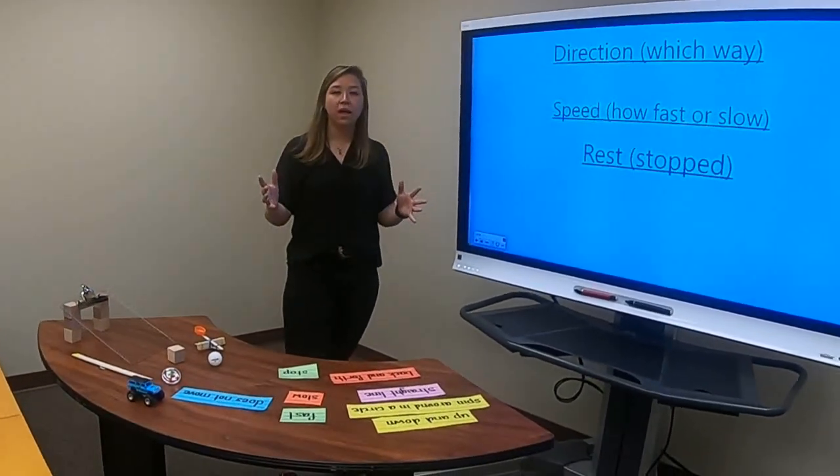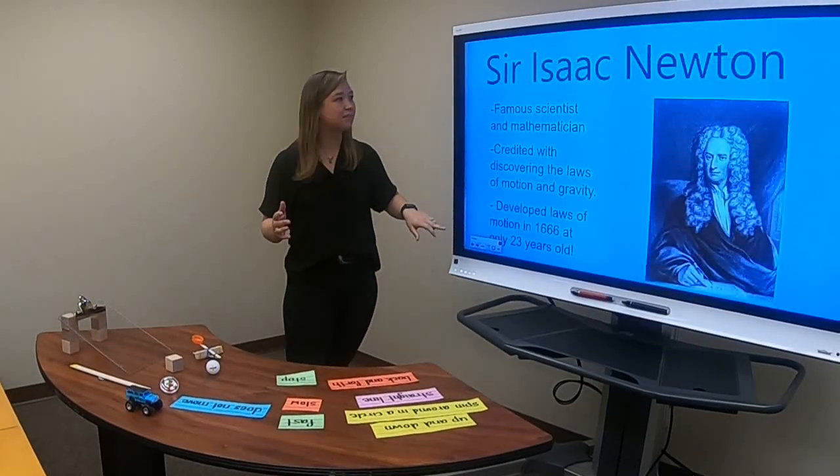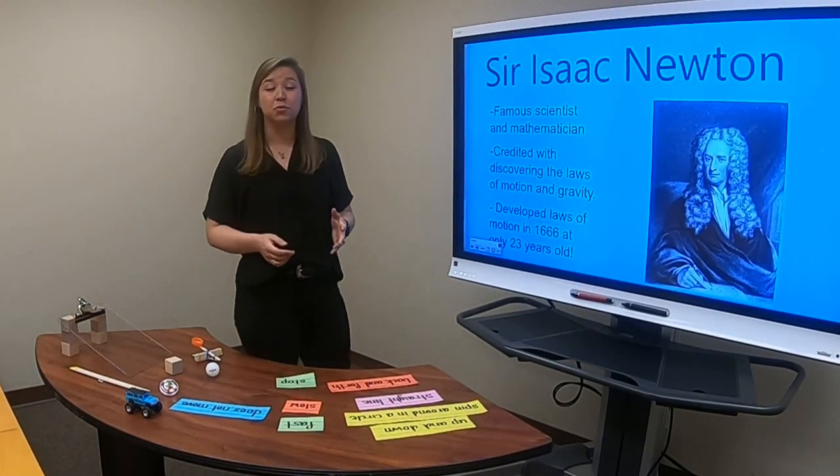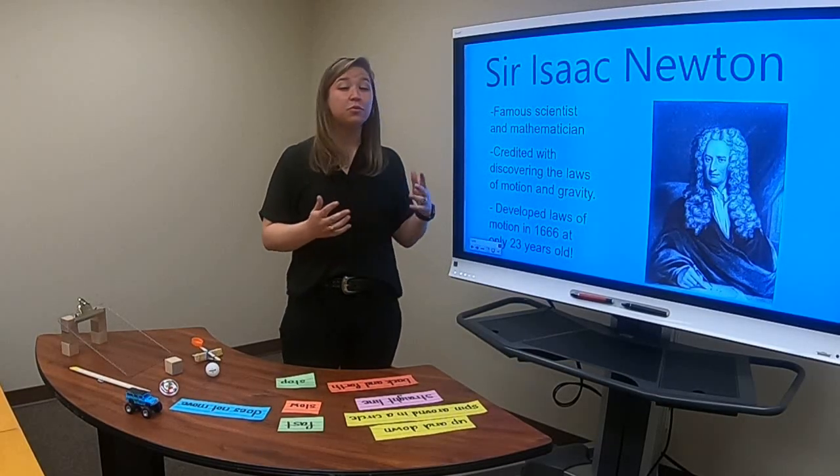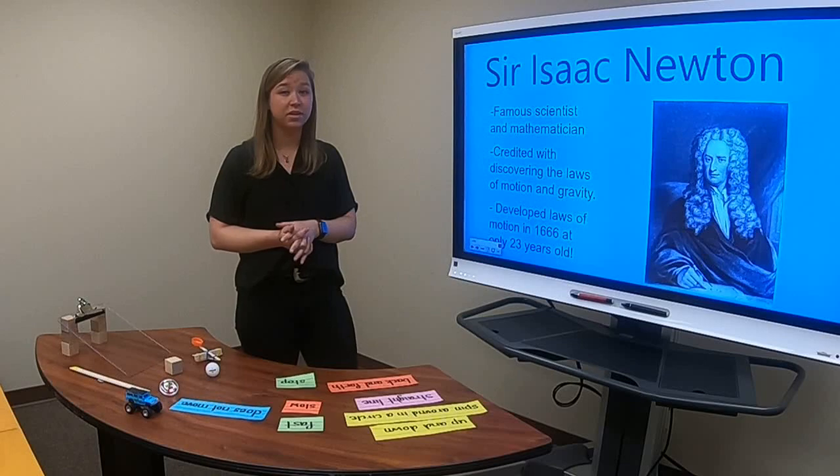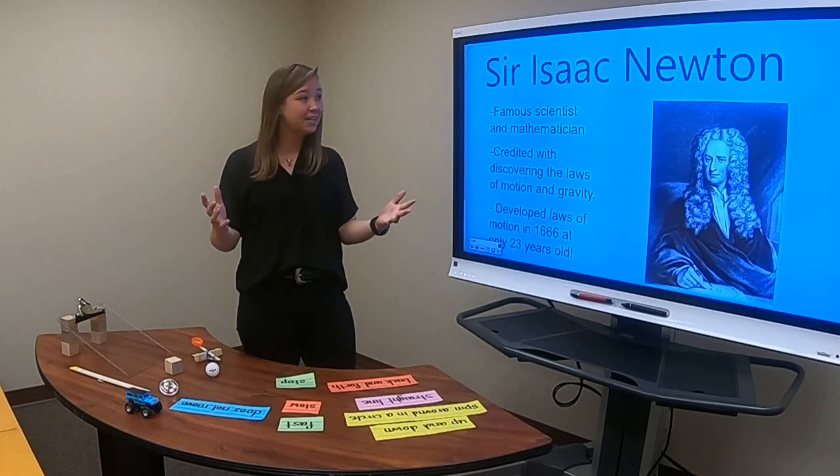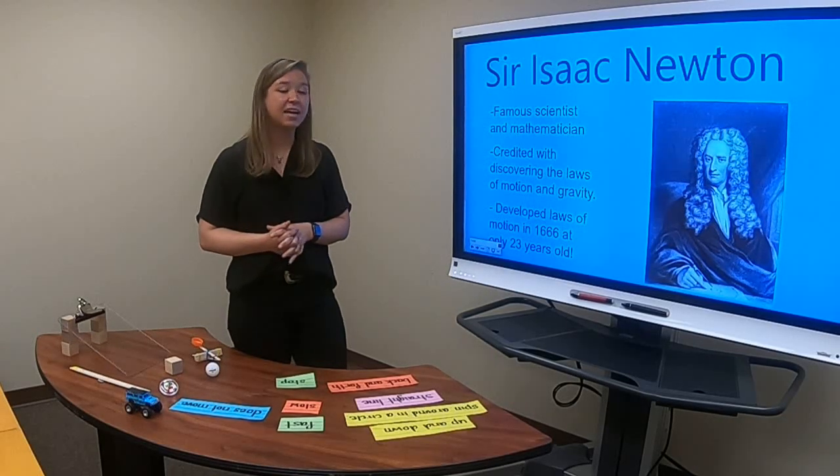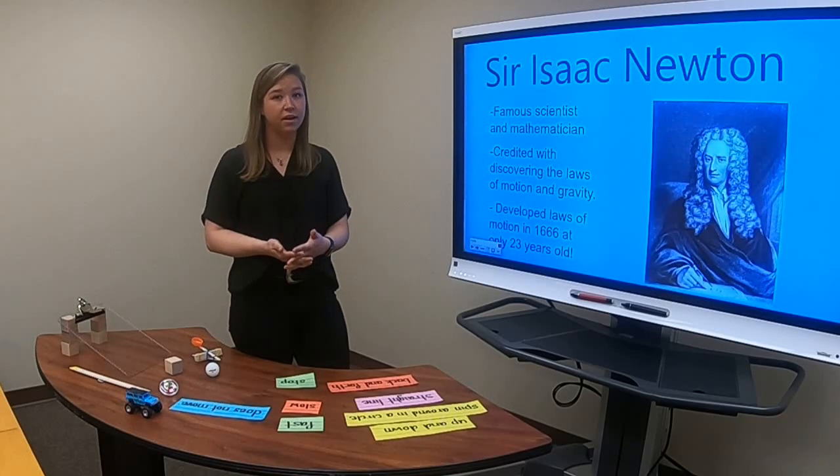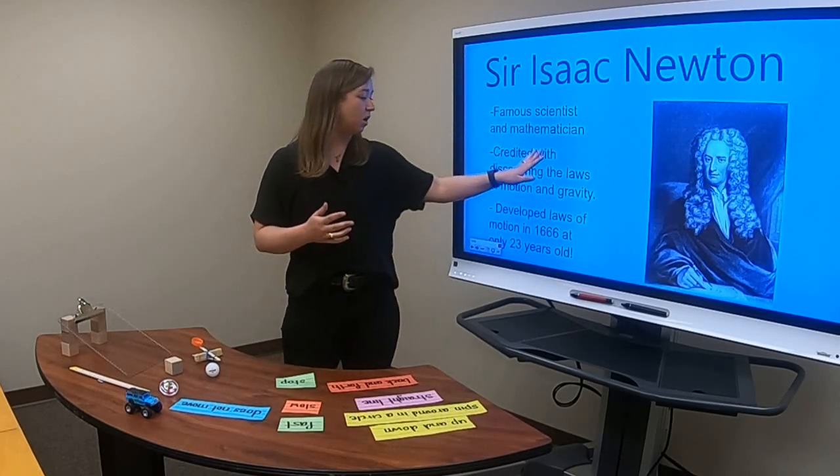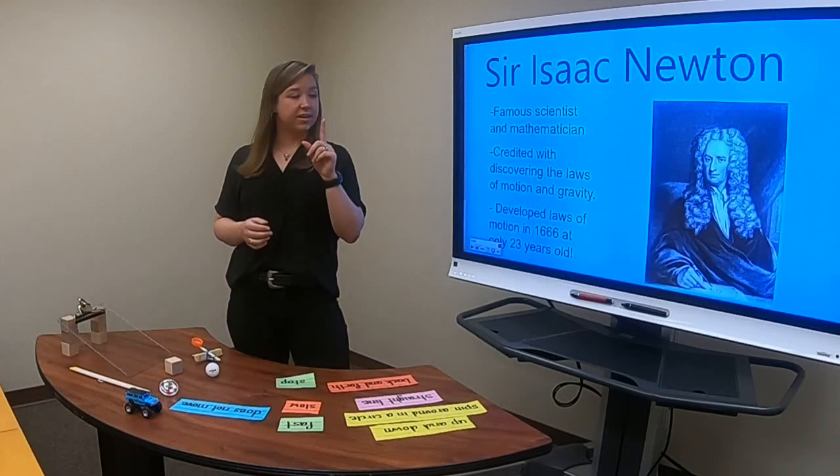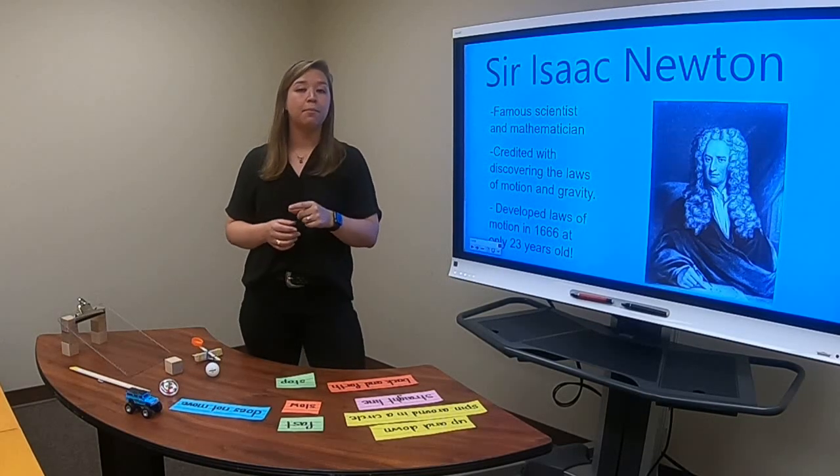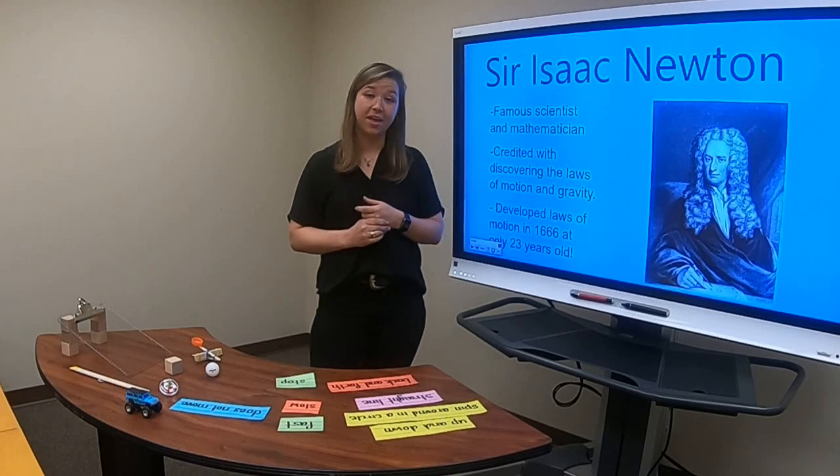So guys, this whole idea of motion was discovered by this guy named Sir Isaac Newton in 1666, which was 354 years ago. He was only 23 years old when he discovered this. And I think that's crazy. He was a famous scientist and mathematician. And we give him credit for finding out the laws of motion and gravity. And the rumor is he found gravity after an apple fell from a tree and hit him in the head.